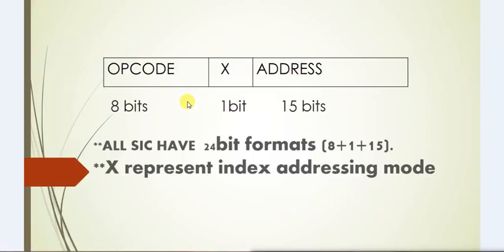The most important thing is that if we sum up the total bits - 8 bits plus 1 bit plus 15 bits - the total is equal to 24 bits. So all SIC have 24 bit formats: 8 bit plus 1 bit plus 15 bit, total 24 bits.